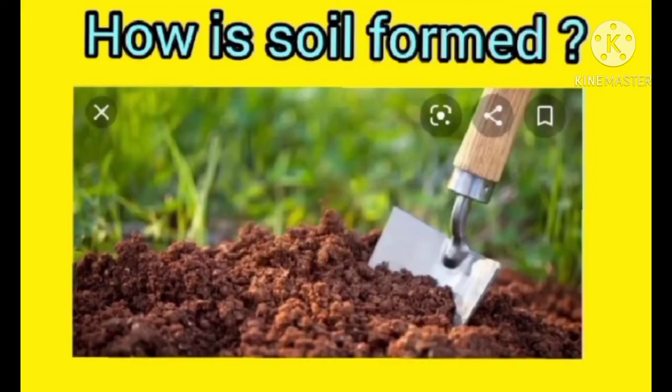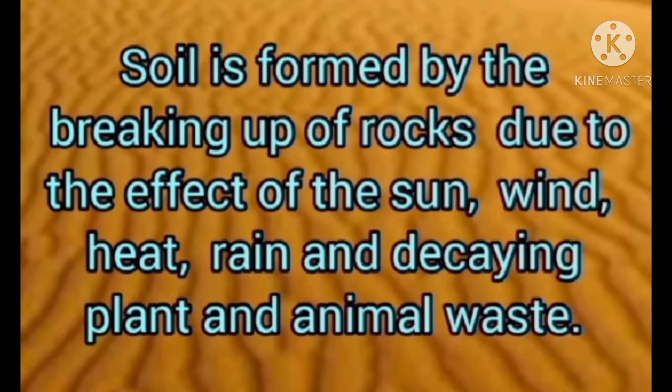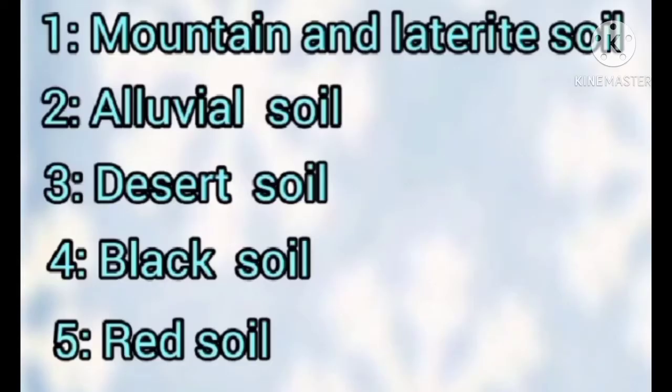How is soil formed? Soil is formed by the breaking of rocks due to the effect of sun, wind, heat, rain, and decaying plant and animal waste. The different types of soils found in India are mountain and laterite soil, alluvial soil, desert soil, black soil, and red soil.